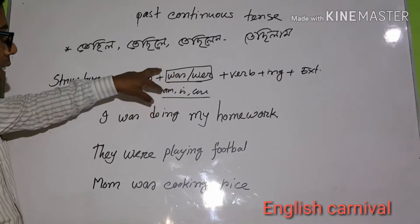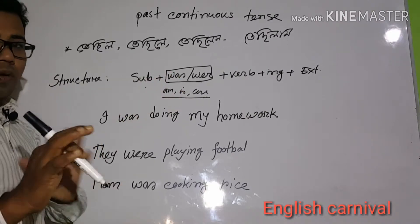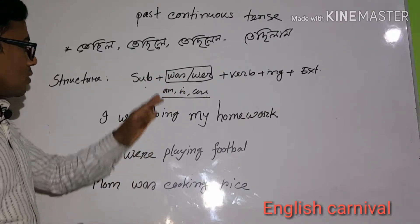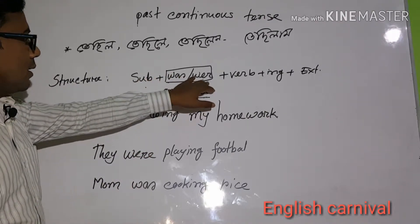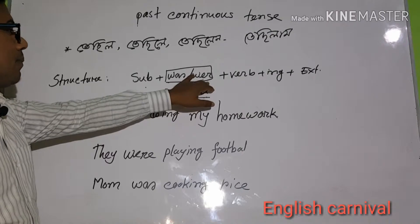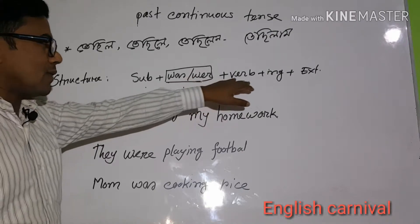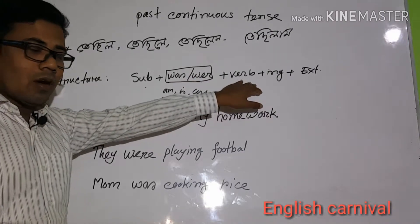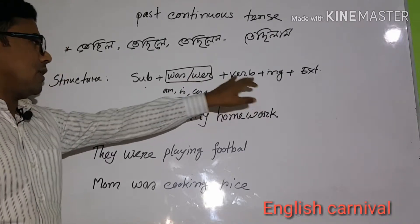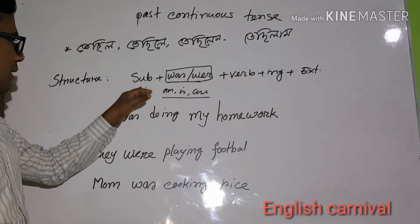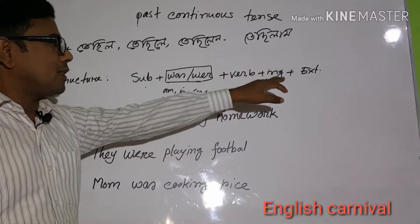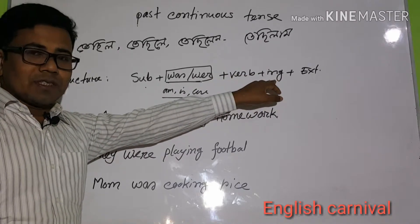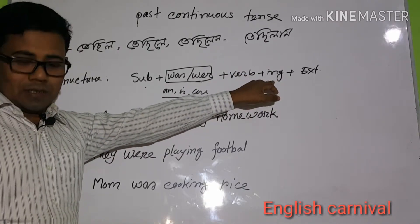There are two key differences. For past continuous tense: Subject + was/were + verb-ing. For present continuous tense: Subject + am/is/are + verb-ing. The auxiliary verb changes depending on the tense — was/were for past, and am/is/are for present.